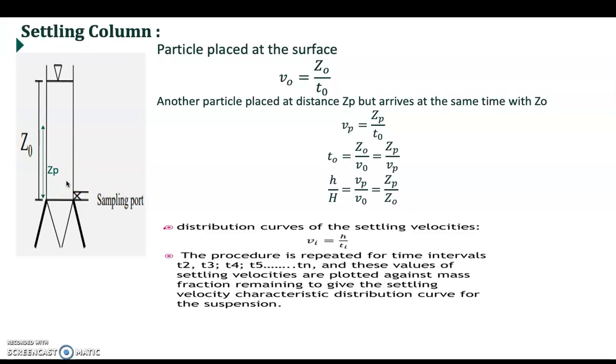We can calculate the velocity at every point in the settling column. The first point is at the surface. We have velocity equal to z_0 over t_0 at t equals time that initially taken the sample. The same formula is applied at any point of this column.